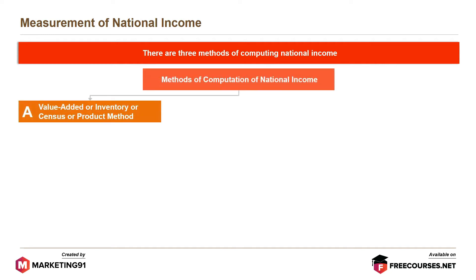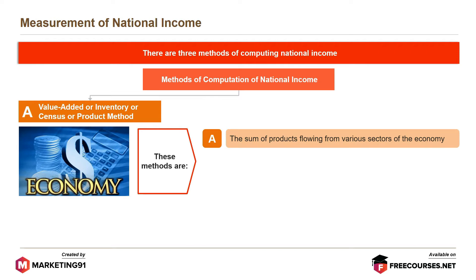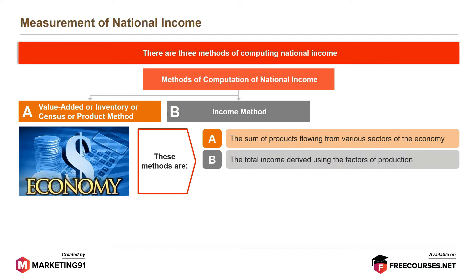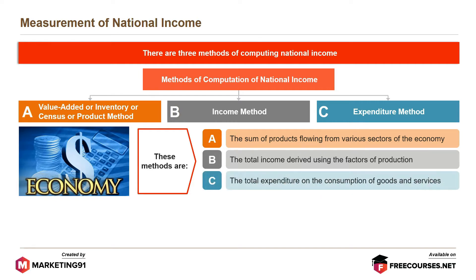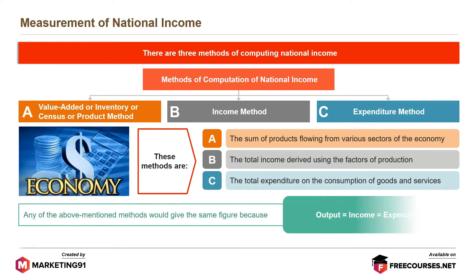The value-added, inventory, census, or product method, which is the sum of products flowing from various sectors of the economy. The income method, which is the total income derived using the factors of production. The expenditure method, which is the total expenditure on the consumption of goods and services. Any of these methods will give the same figure because output equals income equals expenditure.